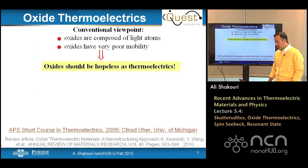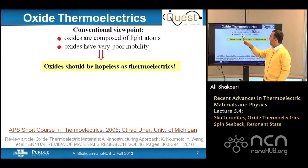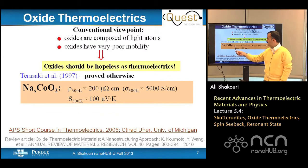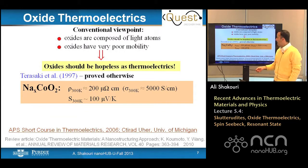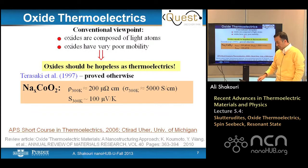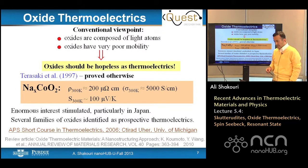Now let's discuss oxide thermoelectrics. Conventionally, oxides seem hopeless as thermoelectrics — light atoms mean high thermal conductivity, and they usually have poor mobility. But in 1997, Ichiro Tarazaki demonstrated otherwise: he measured sodium cobalt oxide with electrical resistivity 5 to 10 times larger than bismuth telluride at room temperature, yet with a Seebeck coefficient of about 100 microvolts — far higher than typical metals. This generated a lot of interest, especially in Japan, and several families have been studied as potential thermoelectrics.